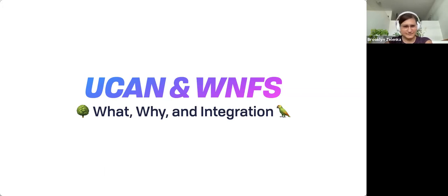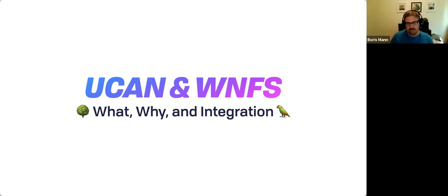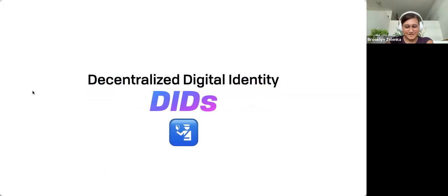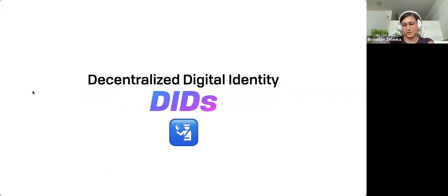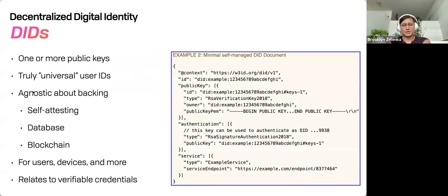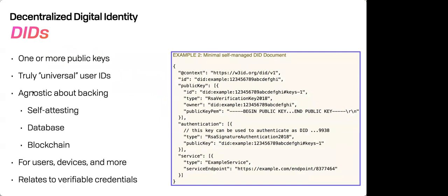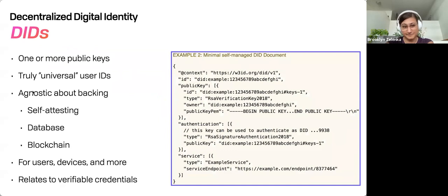So you can integrate Filecoin stuff. Taking it from the very high level, Boris was saying that part of the interest here is in finding a way to integrate DIDs more directly. So decentralized identities, or identifiers technically in the spec, takes the idea of having one or more asymmetric keys and using that to prove that you're allowed to sign some data — to be backed by a database or a blockchain, or be self-verifying, which is what UCANs are.